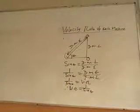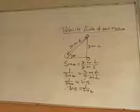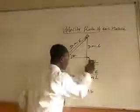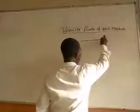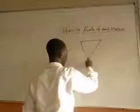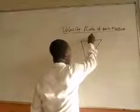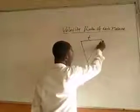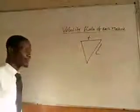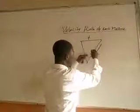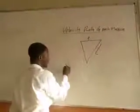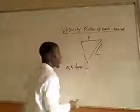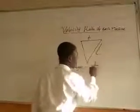Now let's move to the next machine — the wedge. A wedge is like a chisel, or what is commonly called teeth. It has a thickness and a slant height. When you strike it, it enters inside the load. Therefore, the velocity ratio of a wedge is equal to slant height over thickness.